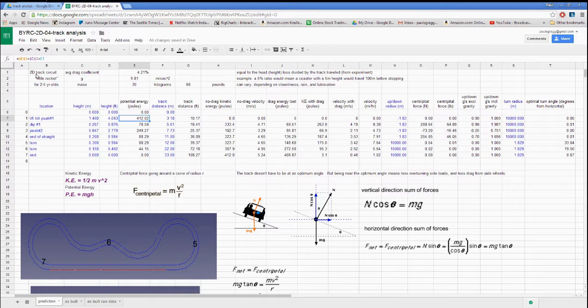Up here, this is what I call it: BYRC, backyard roller coaster dash 2D. I call it two-dimensional, even though it's three-dimensional. I'll tell you why in a minute. Dash 0-4, this is what I call the little rocket. It's for littler kids that maybe weigh 30 pounds or something like that. And it's a pretty small cart, so big kids can't even get in it.